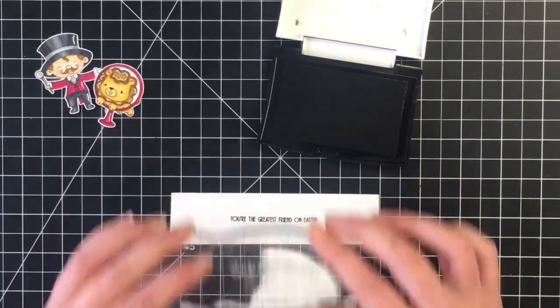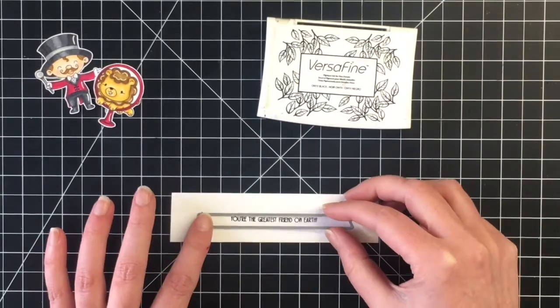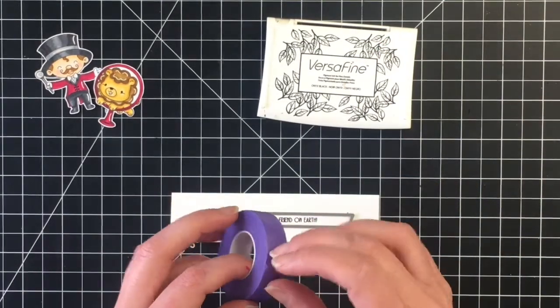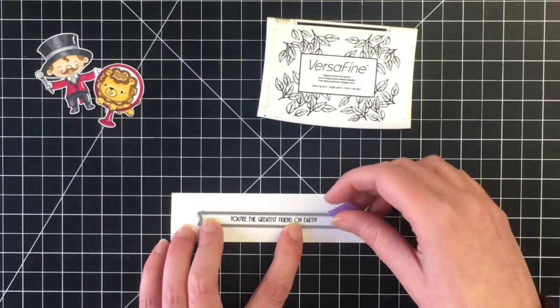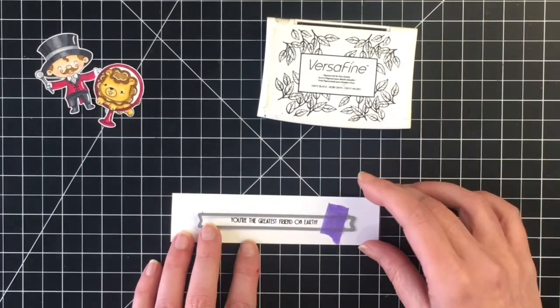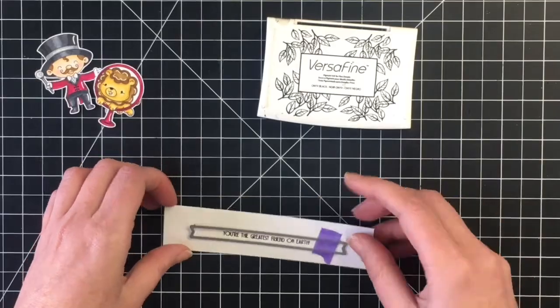So for the sentiment, I'm using You're the Greatest Friend on Earth, which I absolutely love. I just stamped that out with my VersaFine Black Onyx ink, and I'm using an MFT double fishtail banner die here to cut out the sentiment.